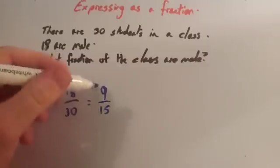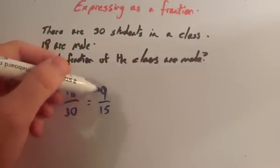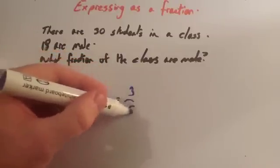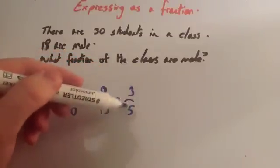Now, 9 and 15 are both divisible by 3. So you divide 9 by 3, and you get 3. And you divide 15 by 3, and you get 5. So three-fifths of the class are male.